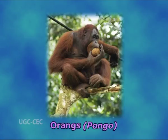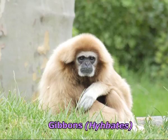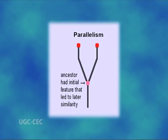When orangutans (Pongo) and gibbons (Hylobates) acquire certain structural similarities in connection with a branching arboreal mode of life, this was largely inherited from the common ancestor. Thus, the phenomenon of parallelism always reveals a hidden genetic potential derived from a common ancestor.